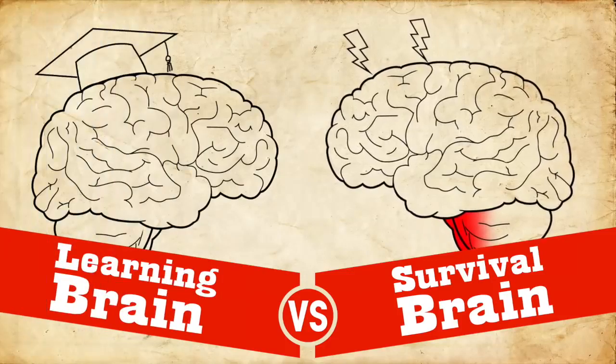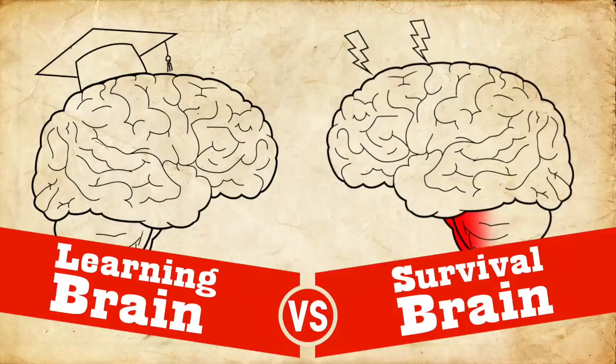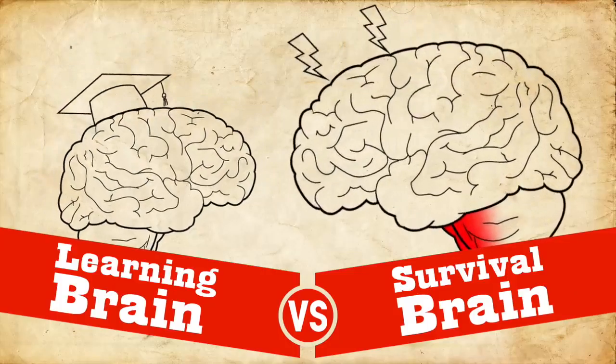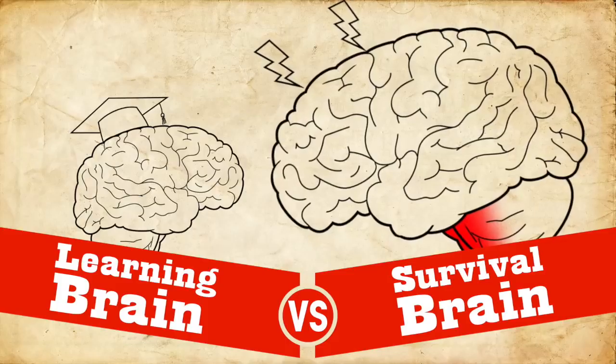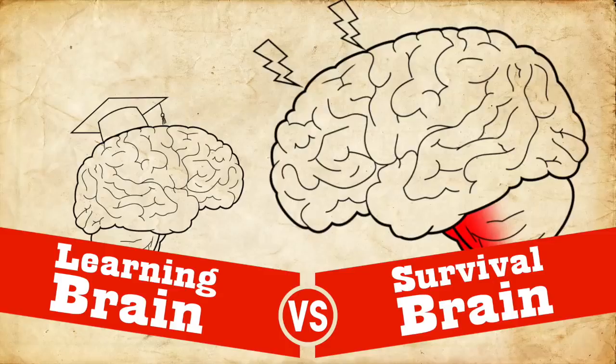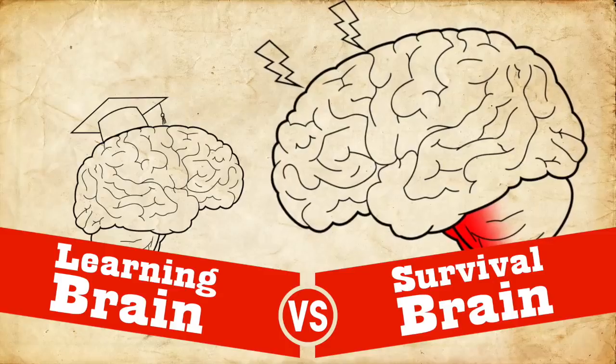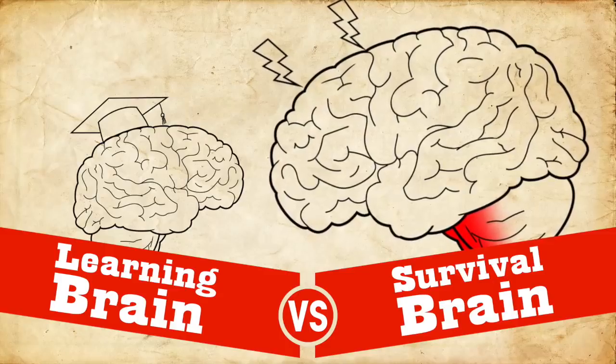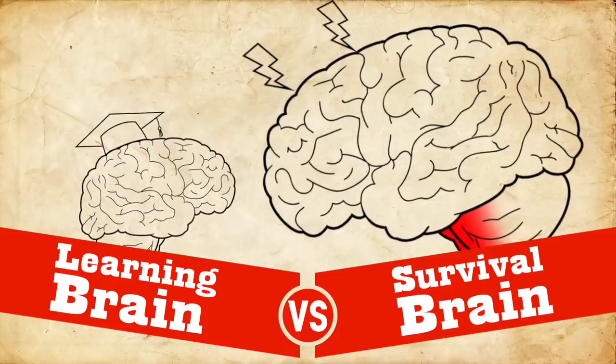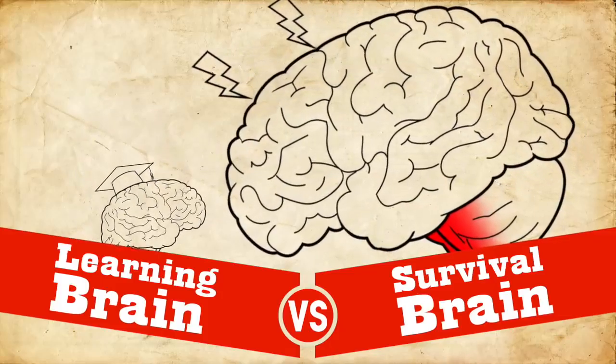Now it's really important to understand how learning brain and survival brain interact. Because survival brain always trumps learning brain. And it makes sense because survival brain is just trying to save your life. And so if it thinks that there's something dangerous happening, you better pay attention to it, right? But the tricky thing is that as survival brain stays on longer and longer, it's harder to get out of that. And it's harder to really go into a learning brain.